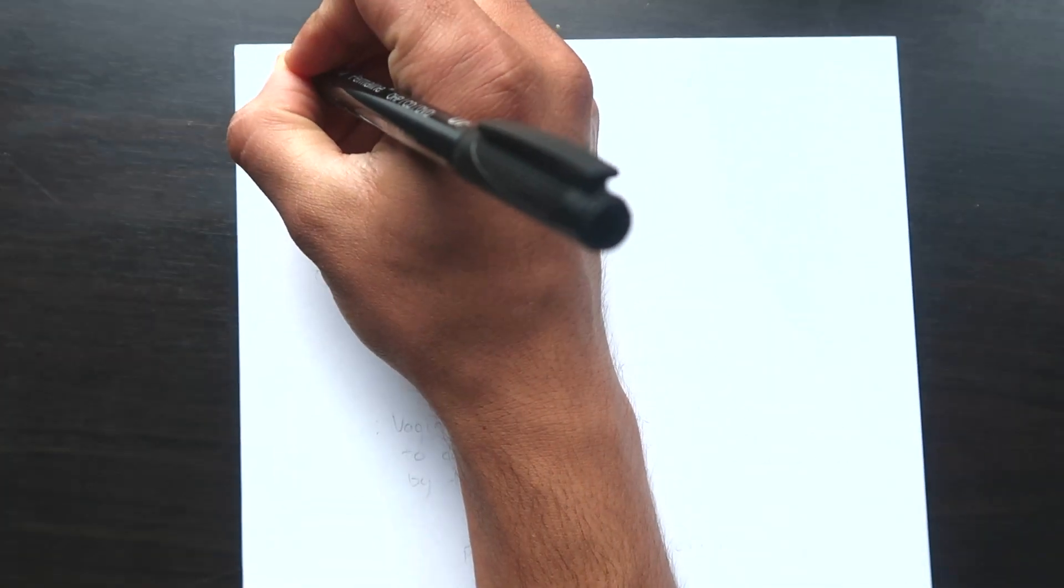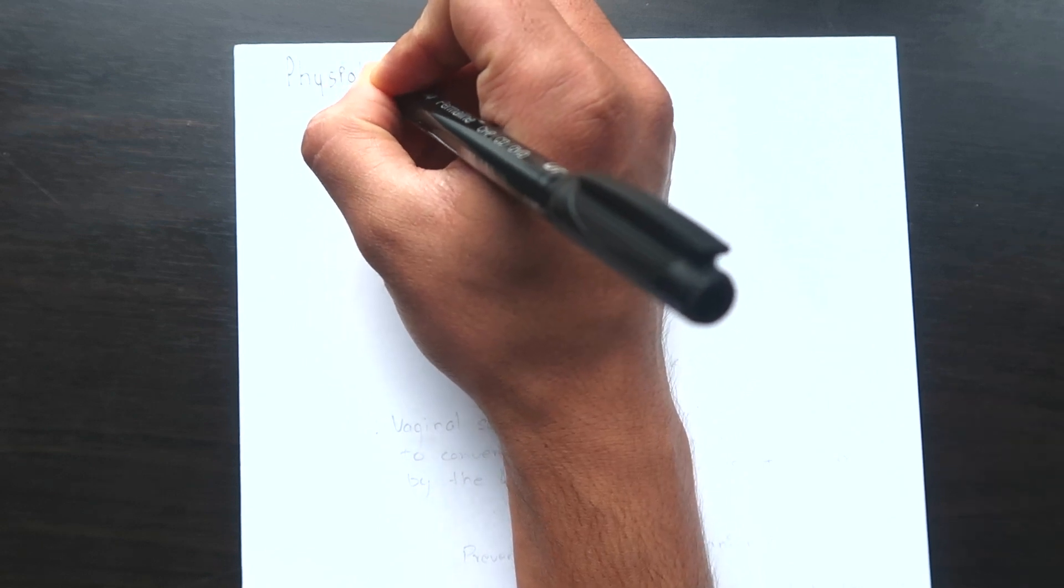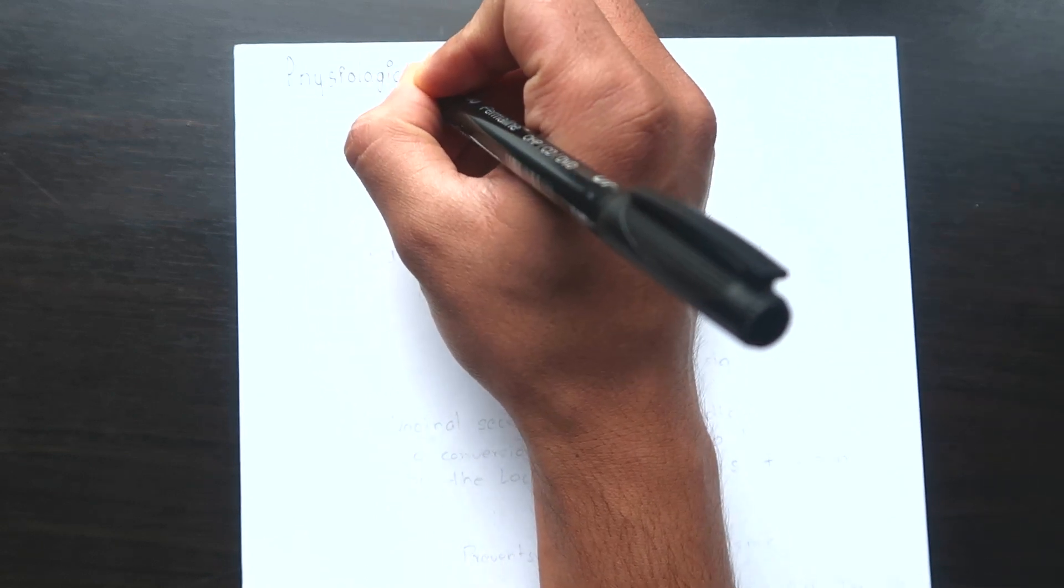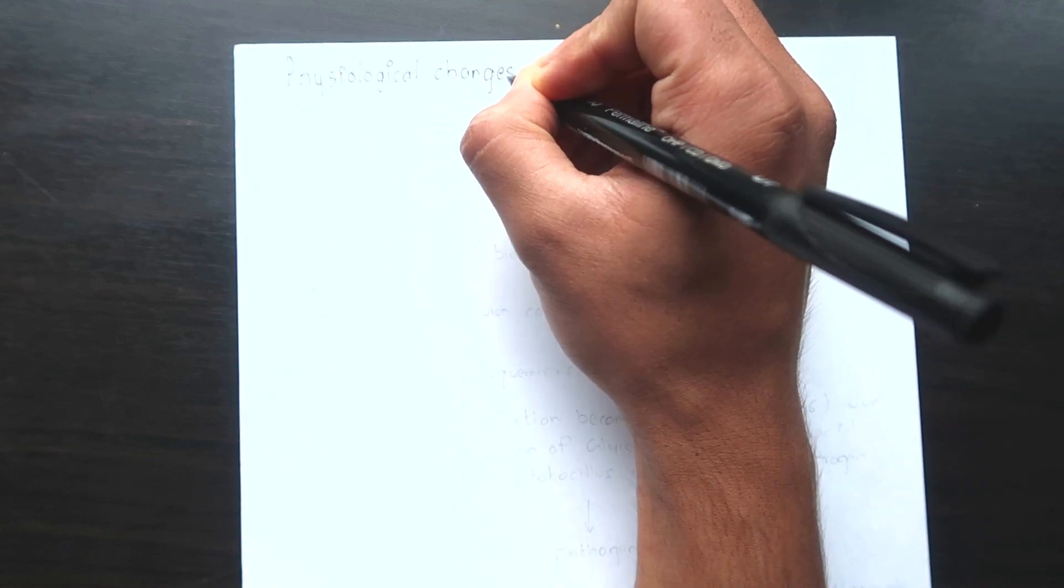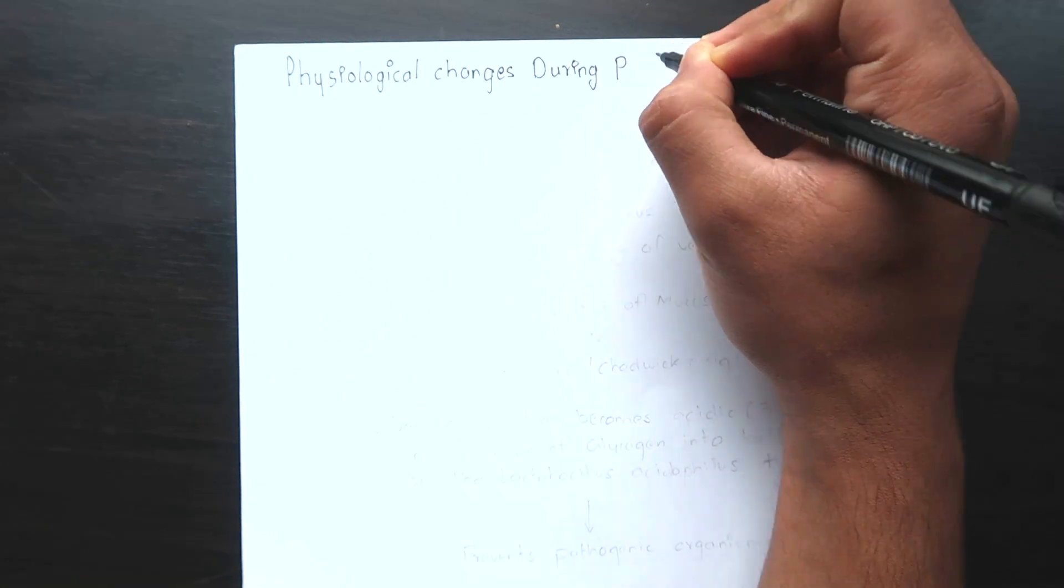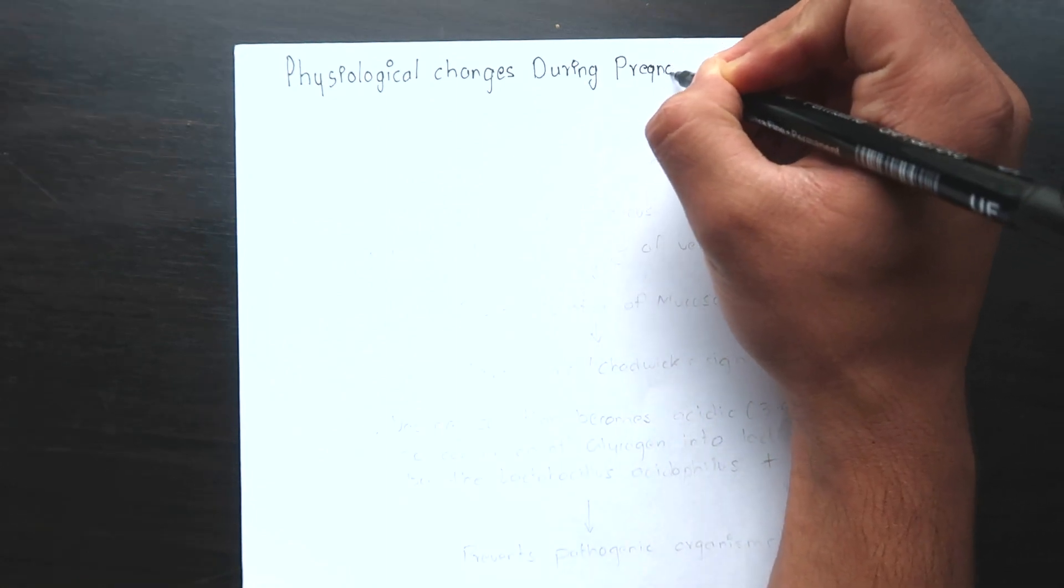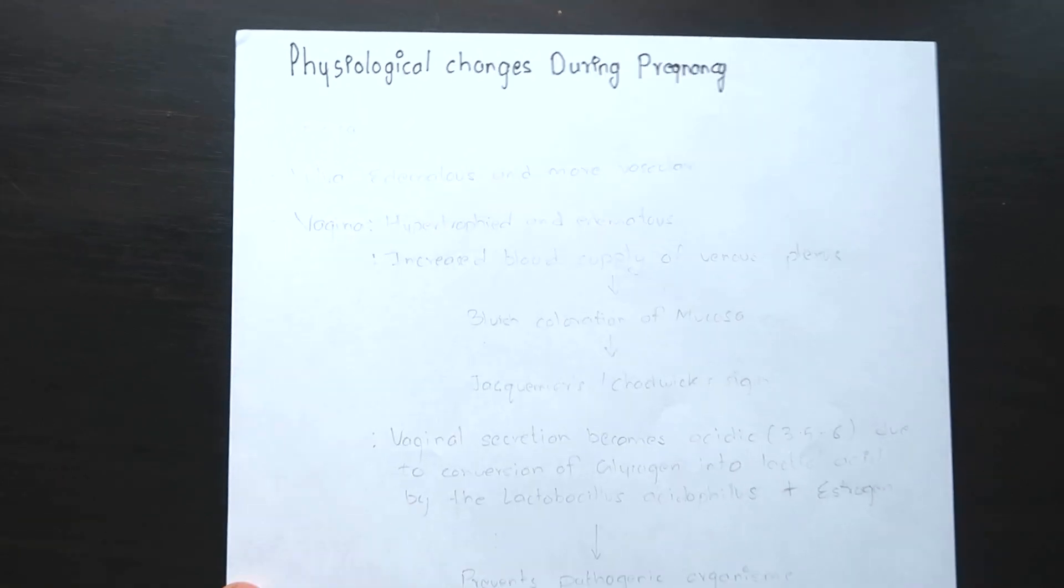During pregnancy, there is progressive anatomical, physiological and biochemical change not only confined to the genital organs but also to all systems of the body. This is principally a phenomenon of maternal adaptation to the increasing demands of the growing fetus. In this video we will be looking at some of the physiological changes that occur during pregnancy.